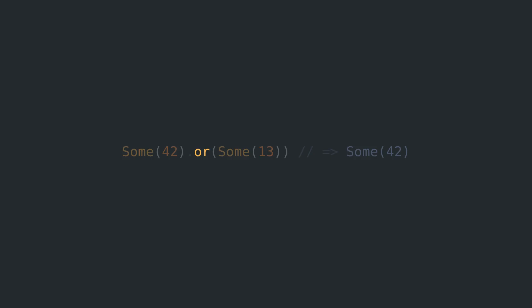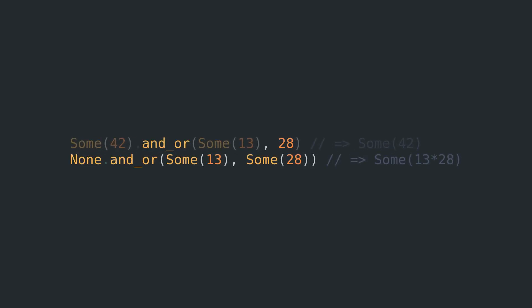Just like with unwrap, ok and map, you can append an OR to AND as well as OR to provide fallback values. This makes the syntax less readable than embedding Haskell in a Fortran 77 program.